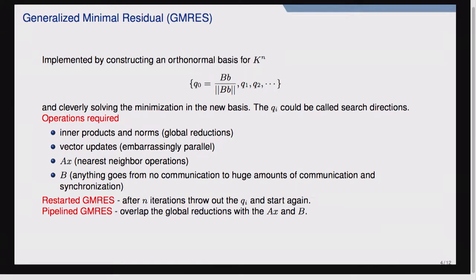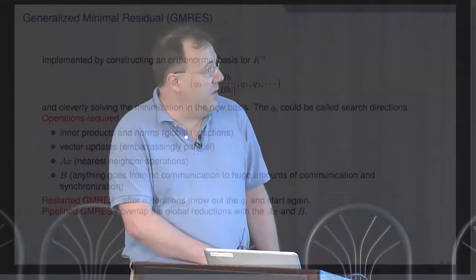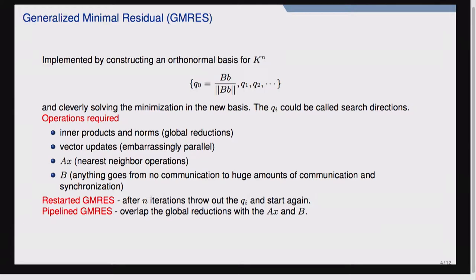For extremely scalable machines, the inner products and norms actually become the bottleneck. Even though there's very little computation involved, they require a hard synchronization across the entire machine as it accumulates sums from all individual processes. There are methods called pipeline GMRES which delay the actual accumulation of global reductions until they're doing another matrix-vector product and application of the preconditioner, overlapping the wait time with local computation. Starting with about 10,000 cores this is sometimes beneficial; with millions of cores, pipeline methods generally pay off.